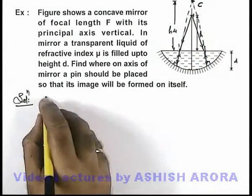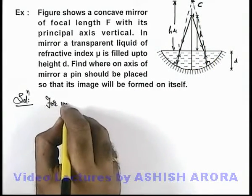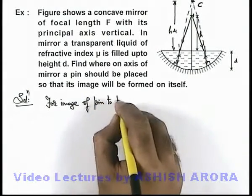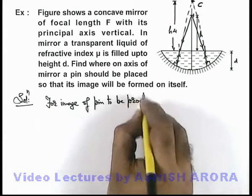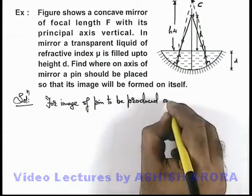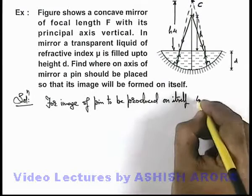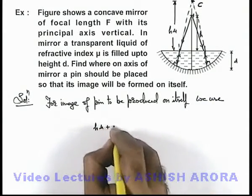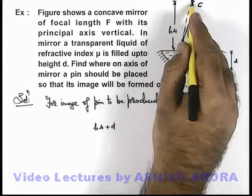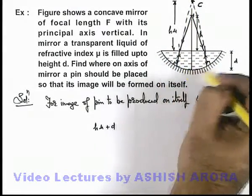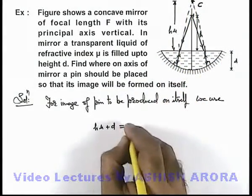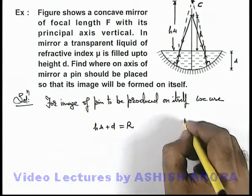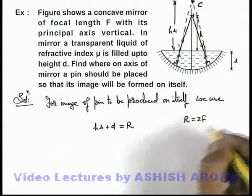For the image of the pin to be produced on itself, we use the condition that h*mu plus d — which is the distance of the point from where the light rays appear to be incident on the mirror — must be equal to the radius of curvature of this mirror. The radius of curvature is given as twice the focal length, i.e., 2f.